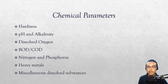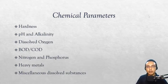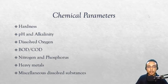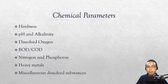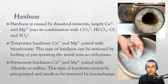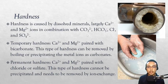We now go to the chemical parameters of water. These include hardness, pH, alkalinity, dissolved oxygen, BOD, COD, nitrogen, phosphorus, heavy metals, and miscellaneous dissolved substances. There are many chemical parameters in reality, but we will focus on the most important ones. Hardness, as mentioned earlier, is a big problem in groundwater.